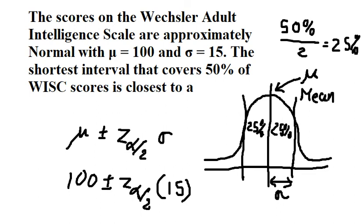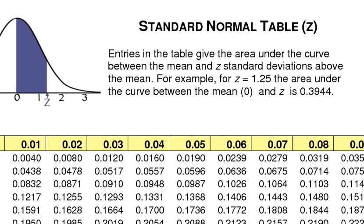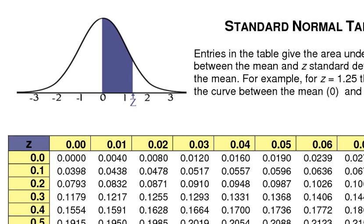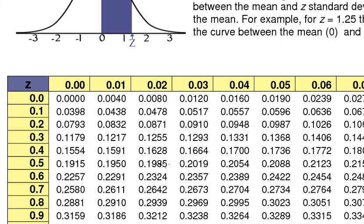So we need to find the value of Z to make sure that they will cover about 25% of this one and this one. And now I will use about the normal table in here.